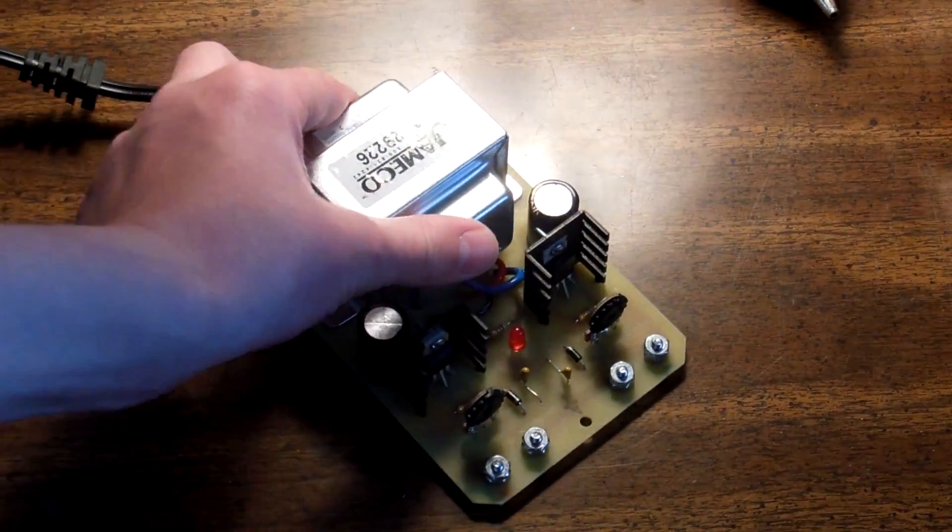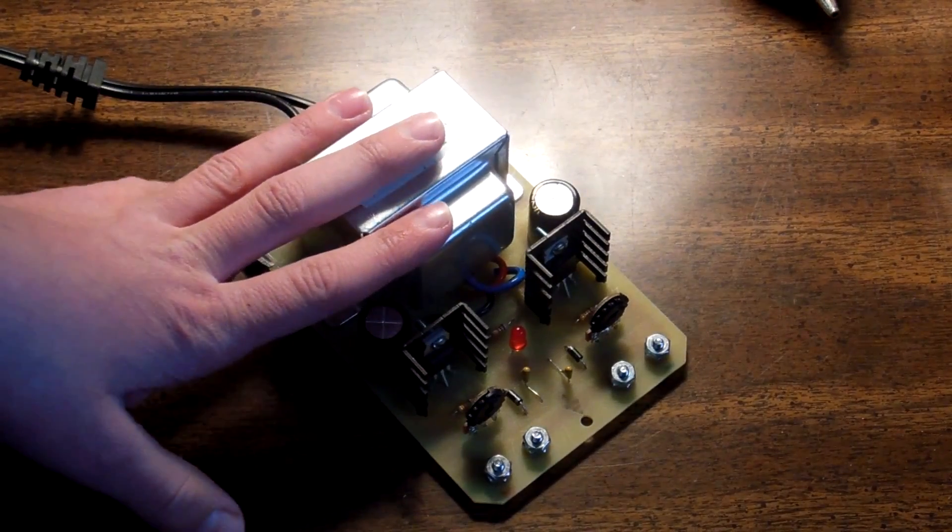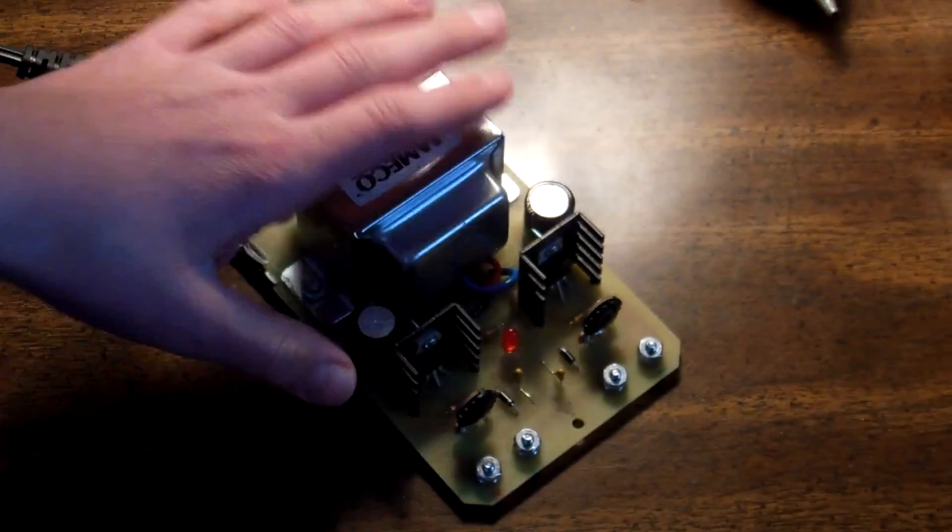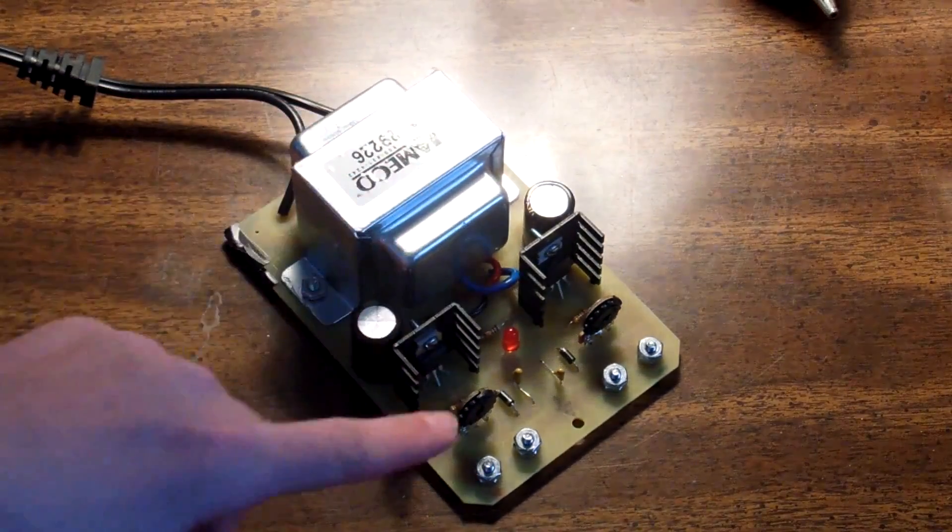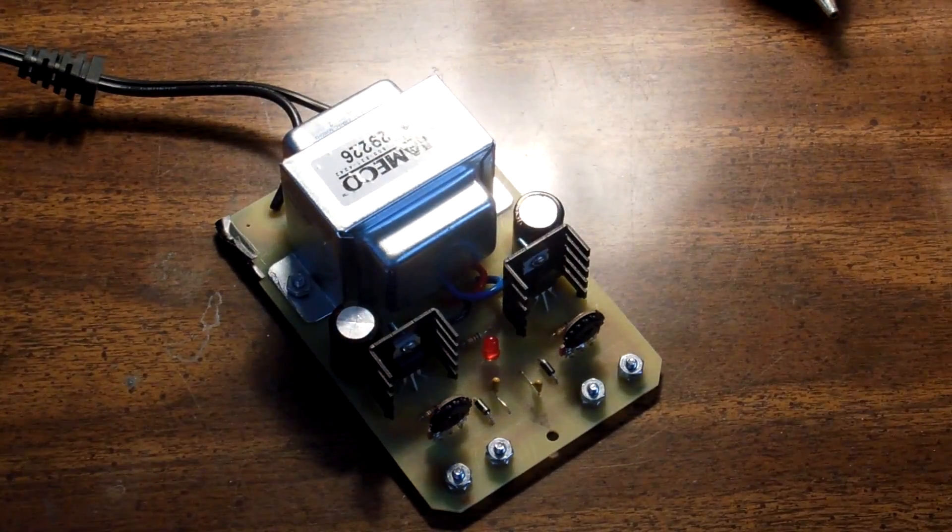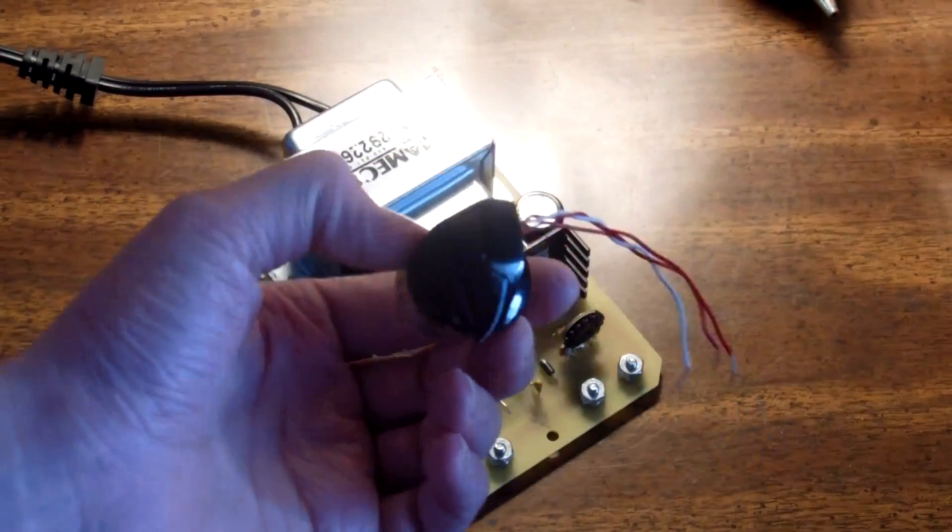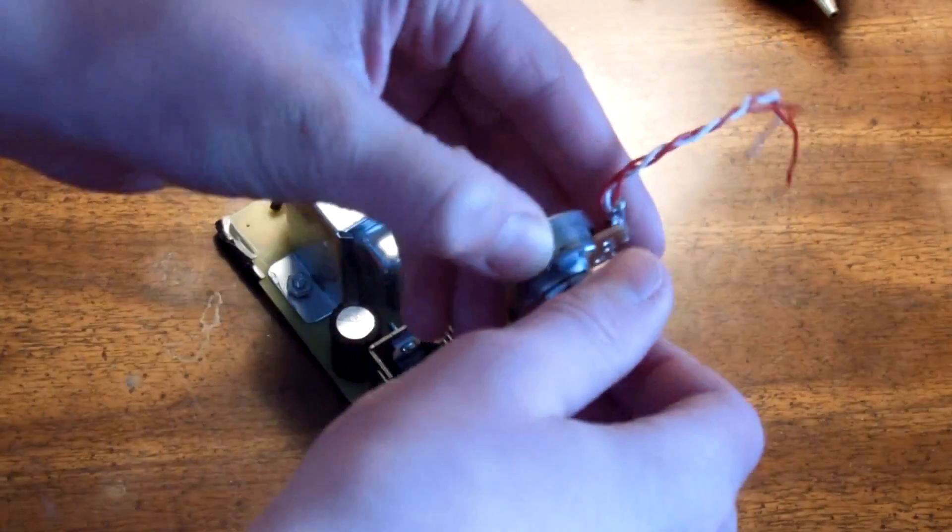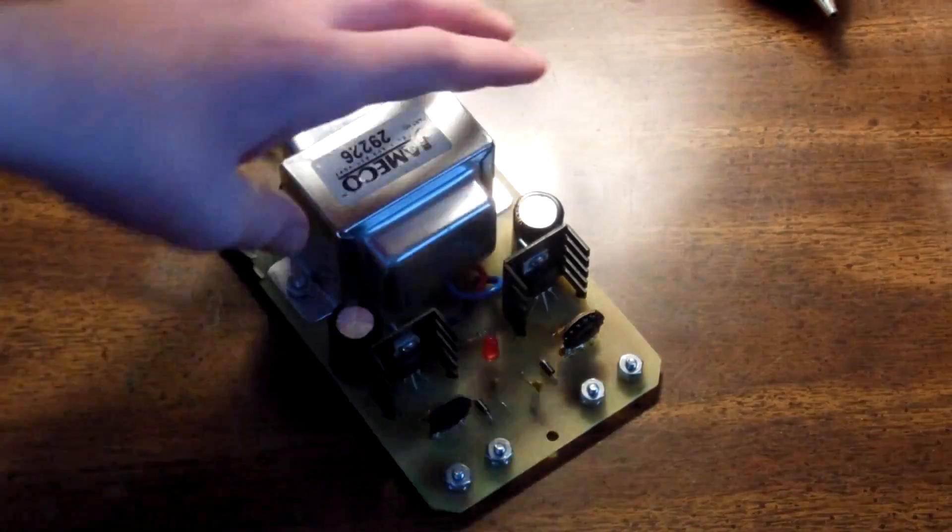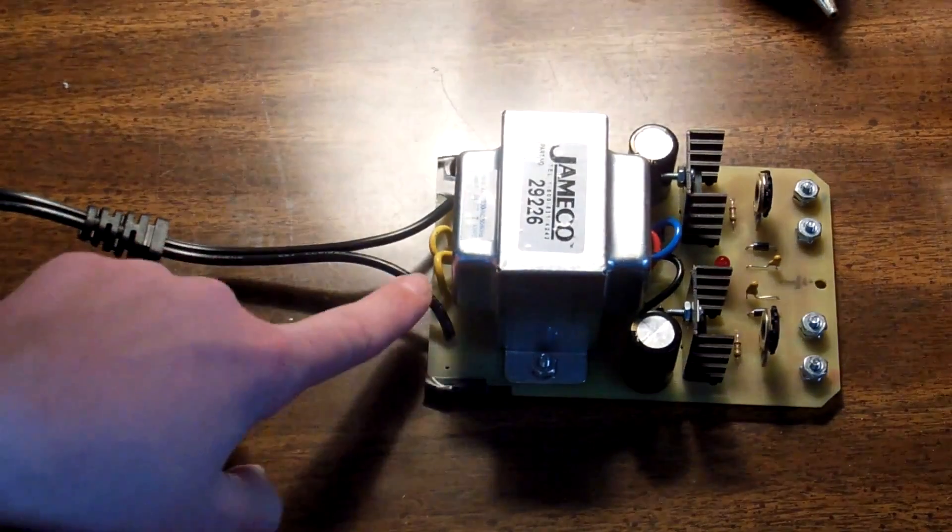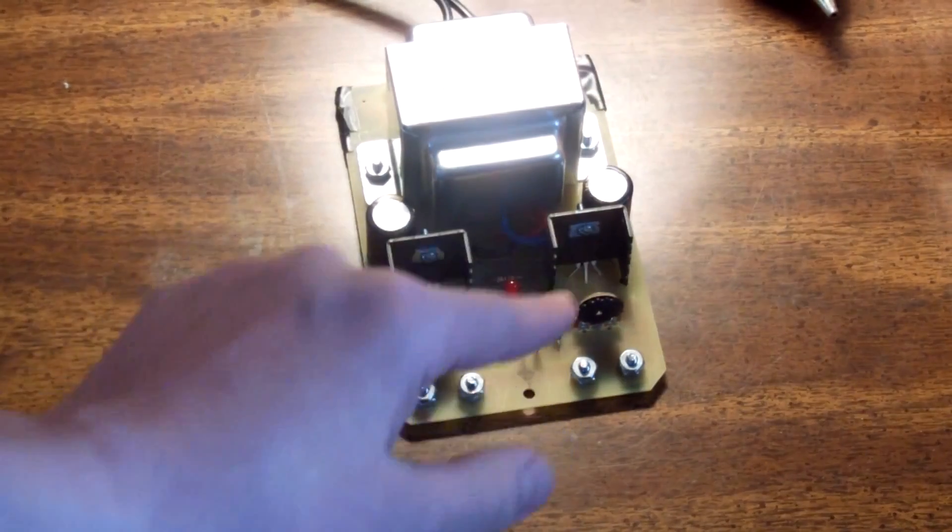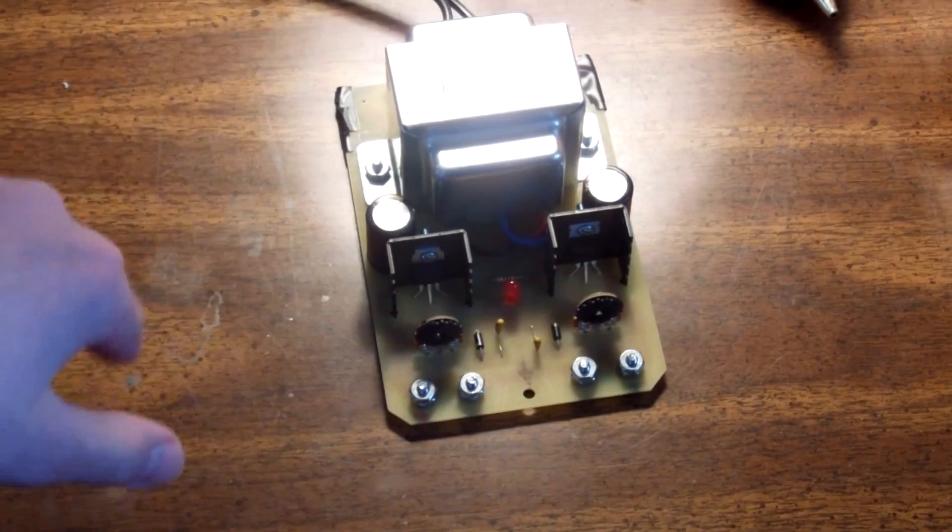The next step for this kit would be to put it into a nice enclosure. You would replace these binding posts, just these little bolts. You would replace them with real binding posts, and you would also replace these trim potentiometers with real potentiometers like this one. You can put a knob on it, and you can just get more precise control with it. Also, you would put a switch in line with this wire, so that from the front you can control the voltage, you can have your outputs, and you can turn it on or off.